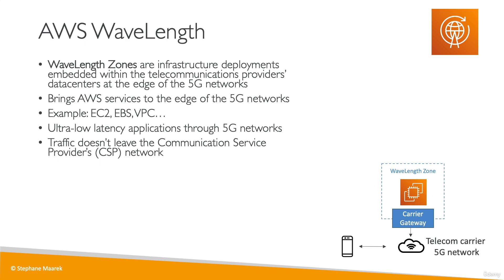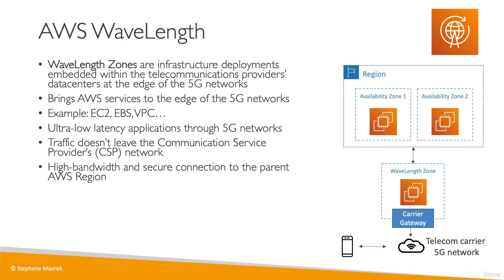The traffic in this case never leaves the communication service provider (CSP) network — it never reaches AWS. But if you do need a secure connection to AWS, you can have one. The Wavelength Zone is connected to the parent region, so your EC2 instances in the Wavelength Zone can access a database such as RDS or DynamoDB within your main parent AWS region.